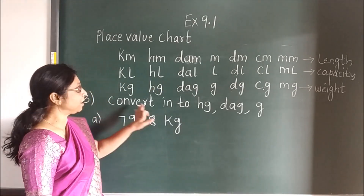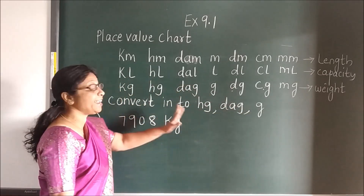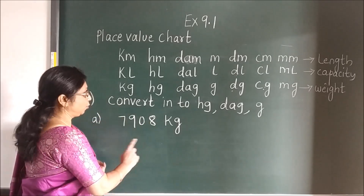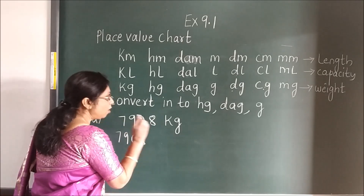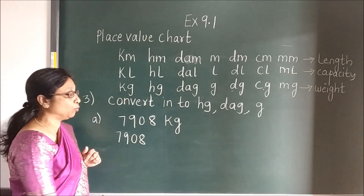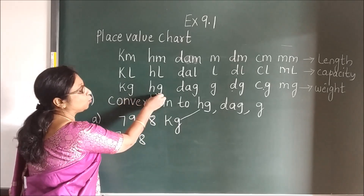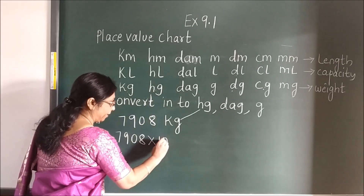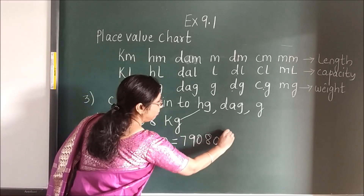Now here: 1, 2, 3 — convert into FG and DAG. That means there are 3 conversions of this single number, children. So now how to do? First we will write here the first number. KG to FG — now slowly, step by step you are going to move. When you move KG to FG, see where it is: KG to FG — you are moving right side. How many times? 1 time. So multiply by 10, and when you multiply you will get the answer. This is FG.